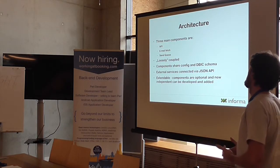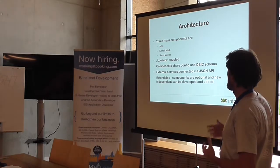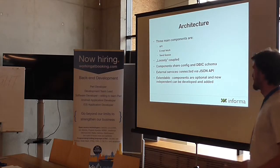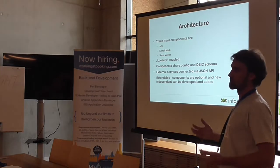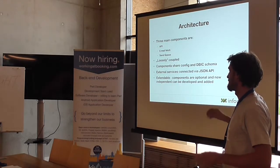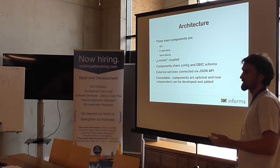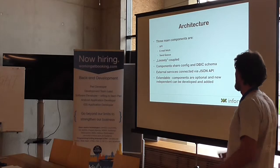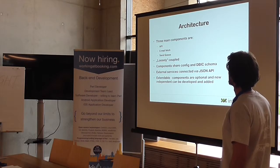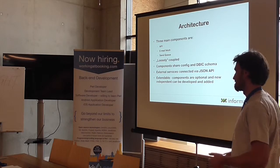StoreM ail is made from three main components: the main API where most of the logic is, an email fetching service, and a send queue service that runs separately. They are loosely coupled — they don't talk through a JSON API between themselves, but they all connect to the same database. They run as separate processes, so you can shut down the send queue and everything still works except for that part, or you can replace any component if needed.